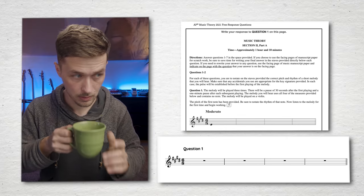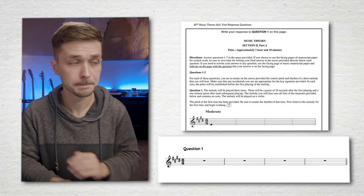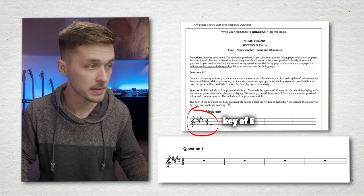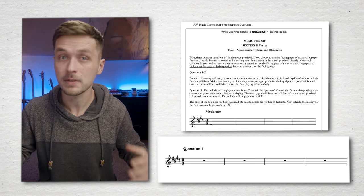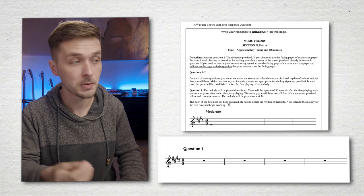The melody you will hear uses all four of the measures provided below and contains no rests. So it looks here like we're in the key of E, we're in 6-8, we start on the tonic E, so whatever the first note that we hear is will be E. I don't have perfect pitch, but we can suss out the relationships of the notes based on how they work within the key, which is relative pitch, which is something that can be trained.